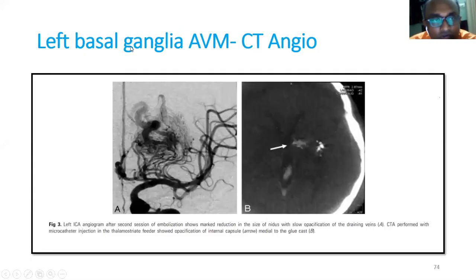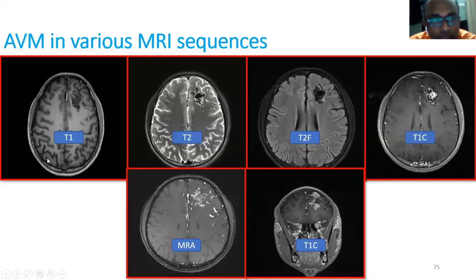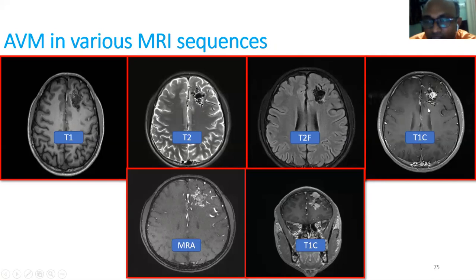The left basal ganglia AVM after treatment shows residue versus response on follow-up imaging. The AVM appears hypo-intense on T1, slightly enhanced on post-contrast, and totally hypo-intense after successful treatment. In MRI you can properly visualize the AVM across various sequences. On T1 contrast, the AVM appearance can be clearly characterized.